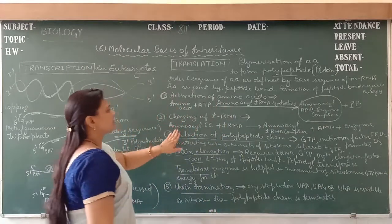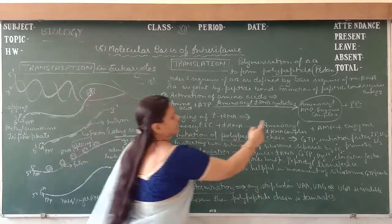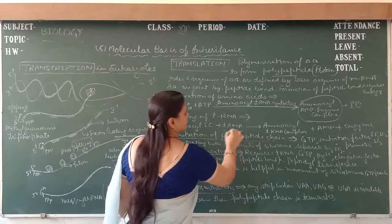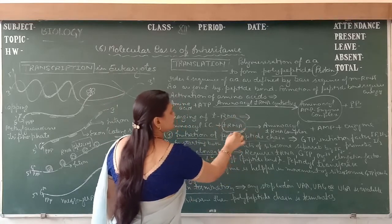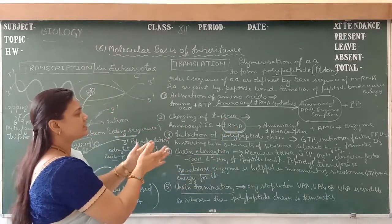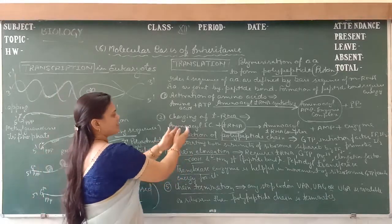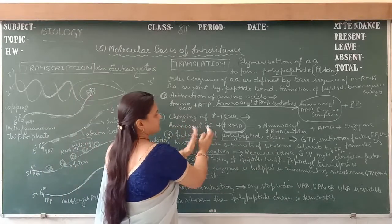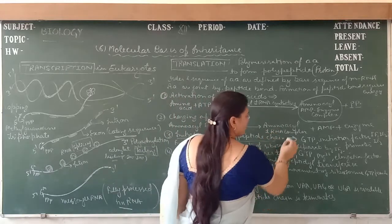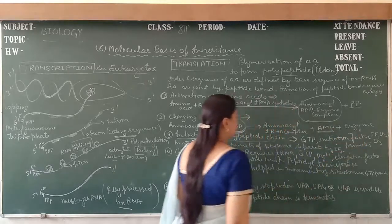The next process is the charging of transfer RNA. In this process, the amino acid adenylate-enzyme complex reacts with the specific transfer RNA. We have already discussed the structure of transfer RNA. Transfer RNA is a cloverleaf structure and it contains the anticodon, which localizes the particular amino acid. This amino acid-enzyme-energy complex is connected with the transfer RNA, forming an aminoacyl-tRNA complex with release of adenosine monophosphate and enzyme.